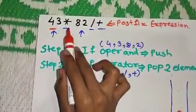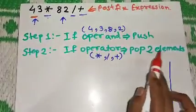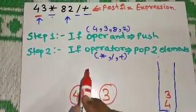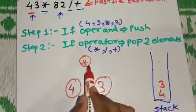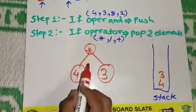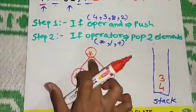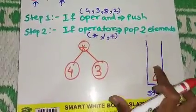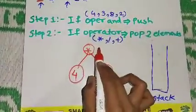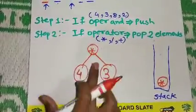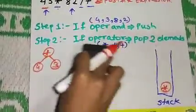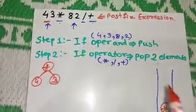The next character is multiplication, which is an operator. If an operator is encountered, we pop two elements from the stack — we pop 3 and 4. The first popped element, 3, becomes the right child of the operator, and the second popped element, 4, becomes the left child. After popping, we insert the multiplication operator's address back into the stack.